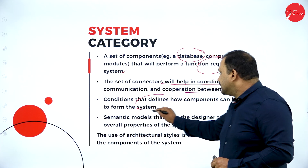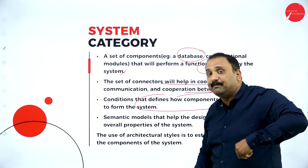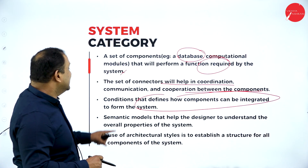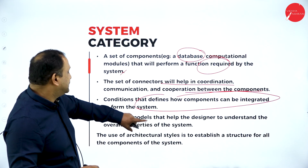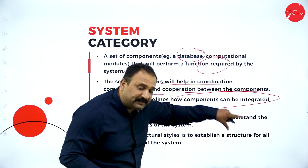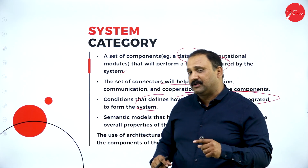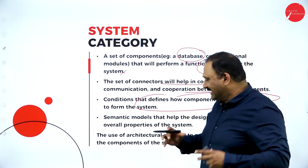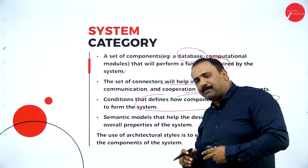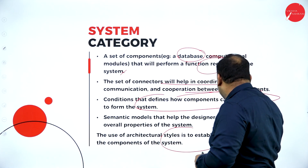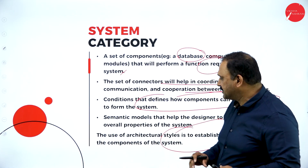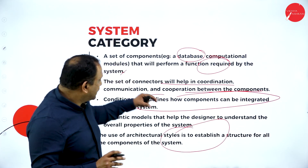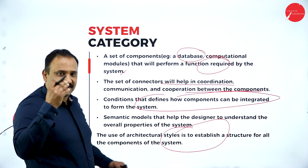Conditions define how computer systems can be integrated in the form of a system. Semantic models help the designer to understand the overall properties of the system — these are the models that are going to define the entire factor. Finally, the use of architectural styles establishes the structure and components of the system. This is the big picture where we connect everything and make a software design come into place.